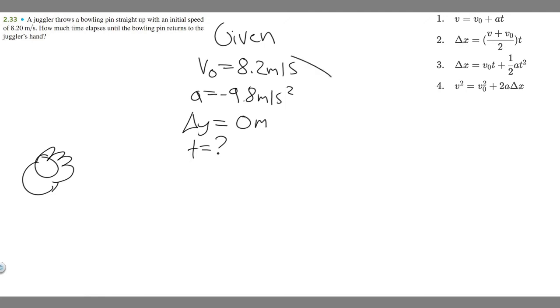So notice here what we're given. And notice that this equation right here, one, two, and four, all contain the variable v. And we don't know v, so we can't use those to solve. And if you look at the third one, notice how we're given all these variables.